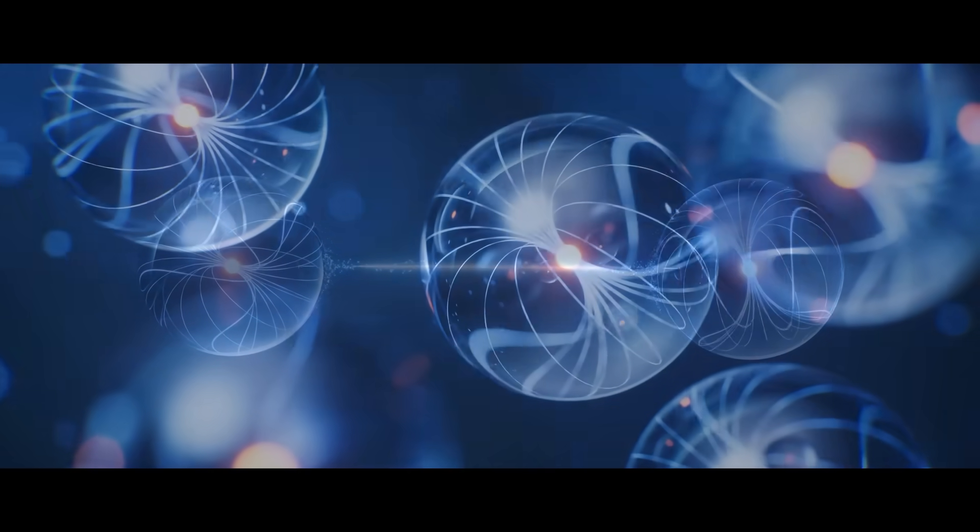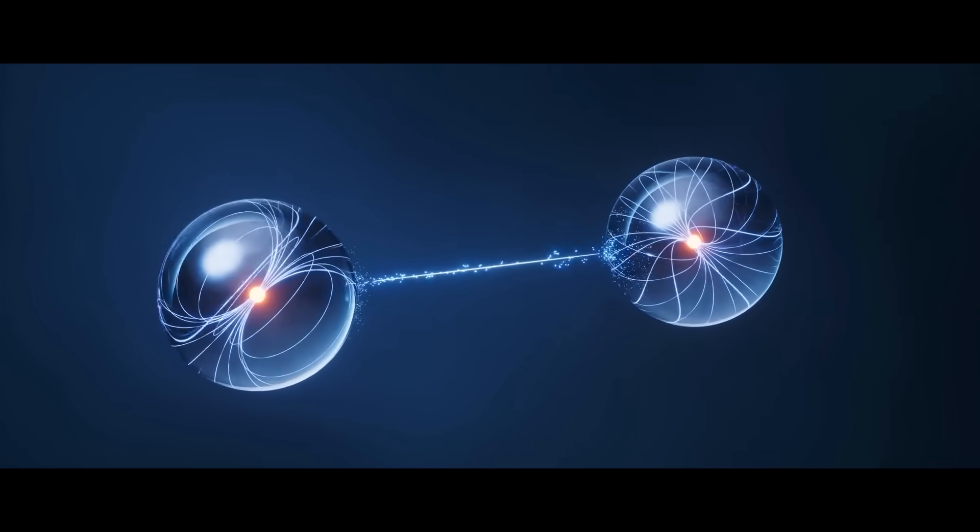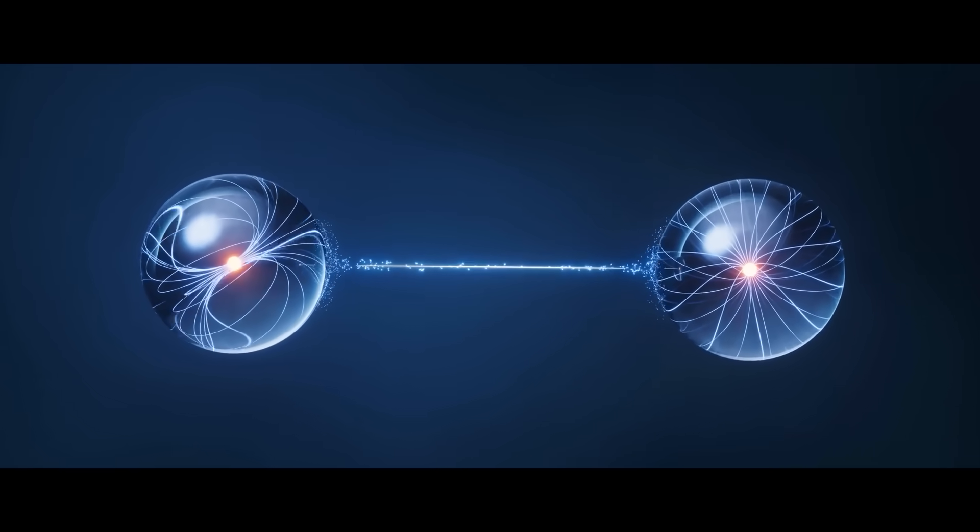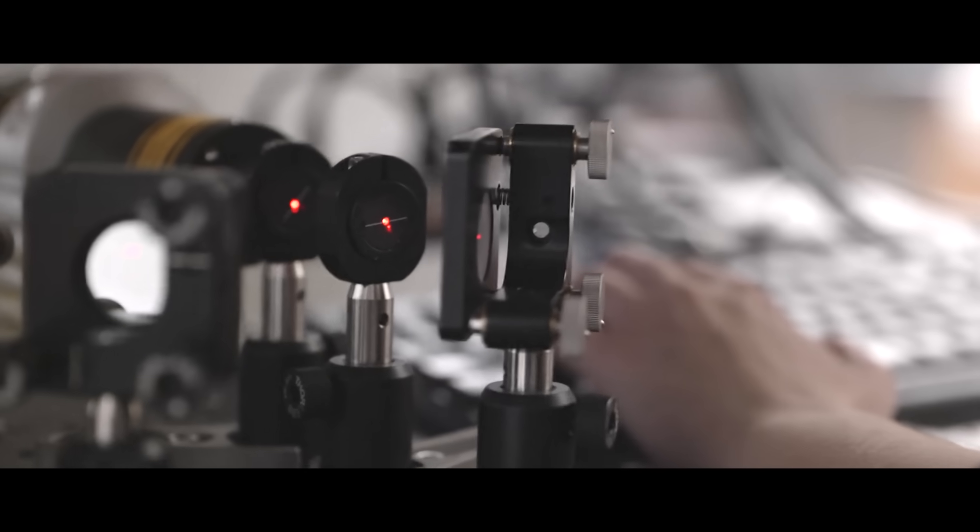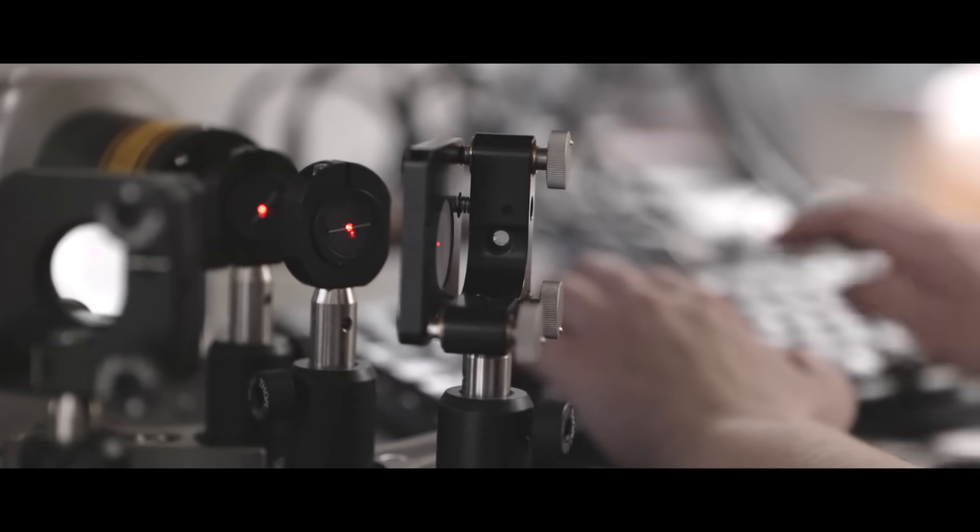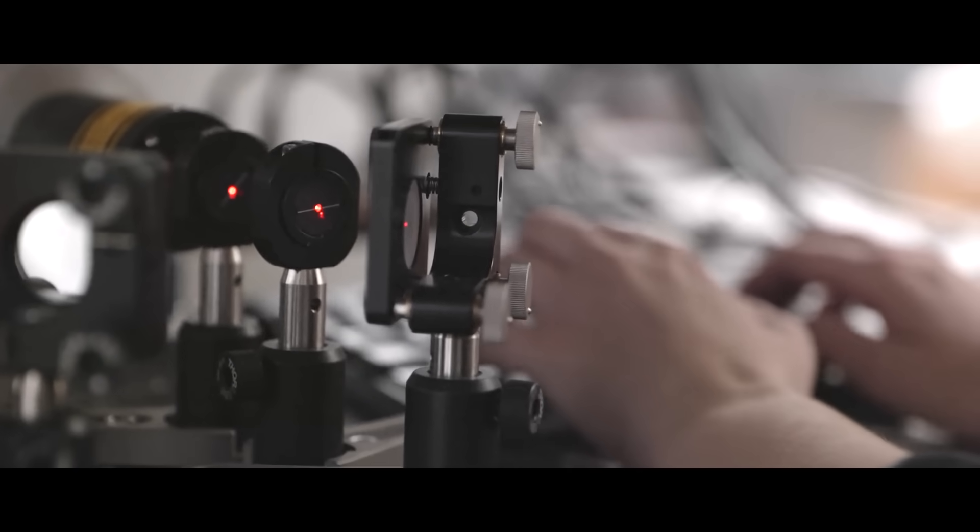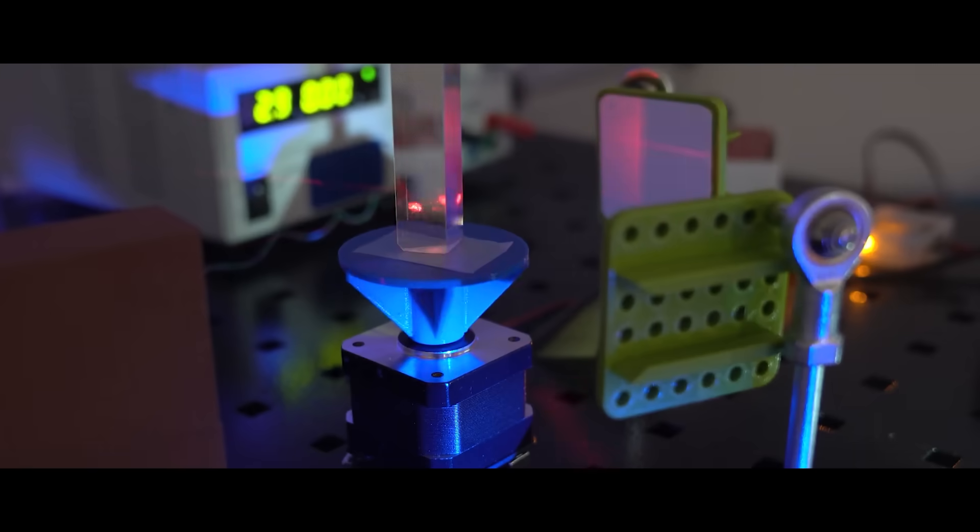But how are entangled particles created? And if this faster-than-light connectivity is able to occur in a quantum computer, then why can't it be used for instant, faster-than-light space communication, say between Earth and Mars? So to create entangled qubits in quantum computers, scientists use precise lasers and electromagnetic fields. You bring two particles, like electrons or photons, extremely close together under very controlled conditions. And when they are manipulated in just the right way, they become entangled. Their quantum states become linked.